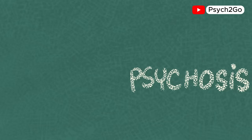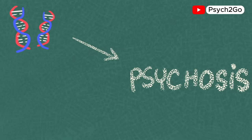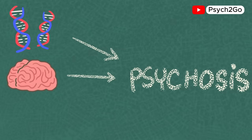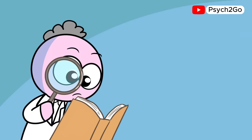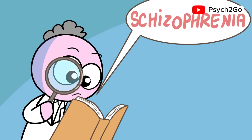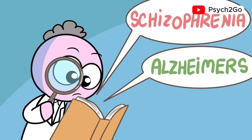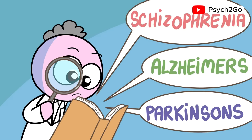There are no specific factors that cause psychosis. It's a mix of genetic factors, differences in brain development, and exposure to stressors or trauma. Psychosis is a symptom that helps doctors diagnose mental illnesses like schizophrenia and conditions like Alzheimer's and Parkinson's.